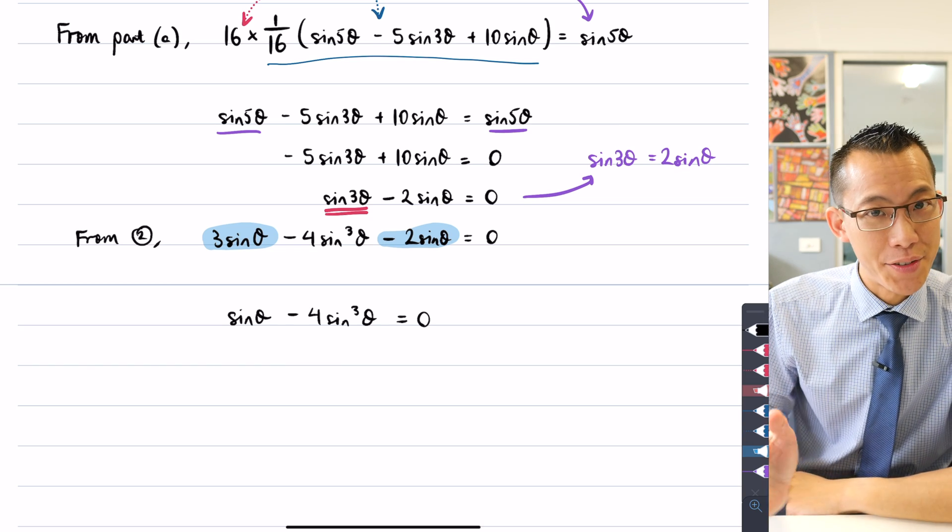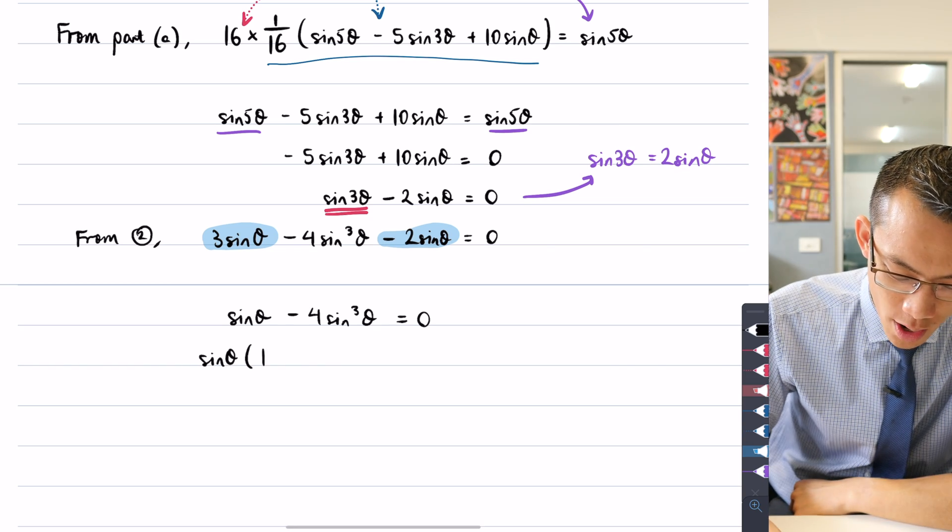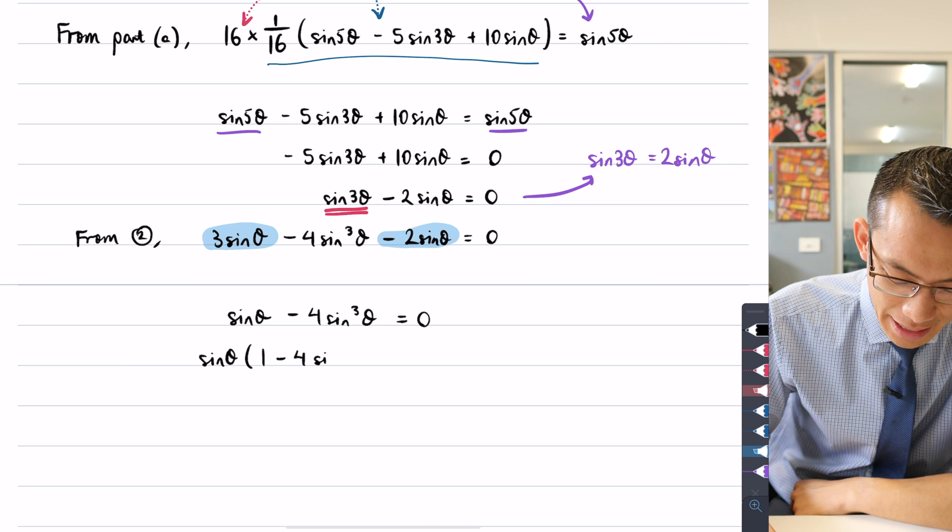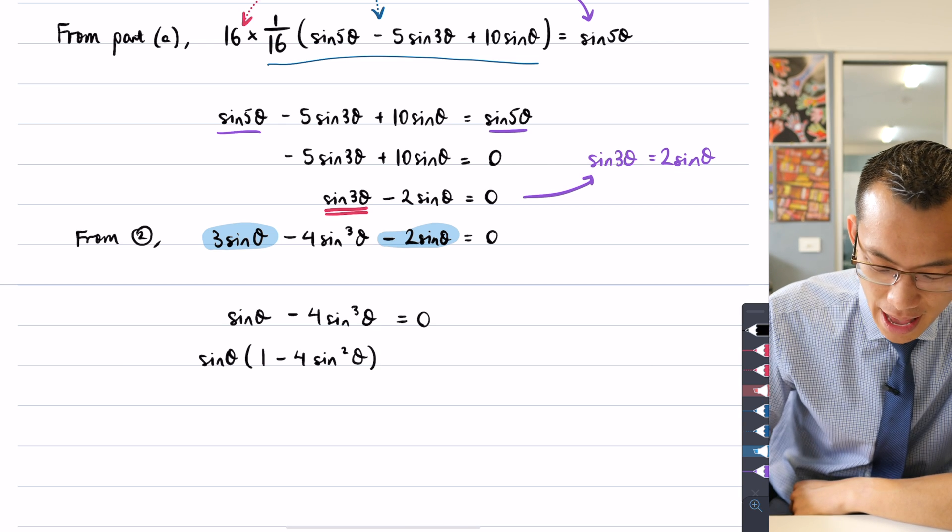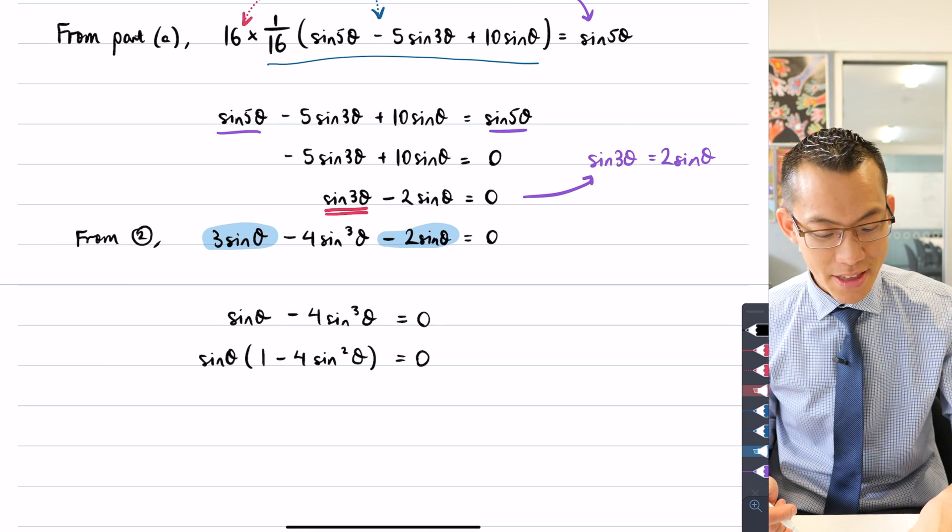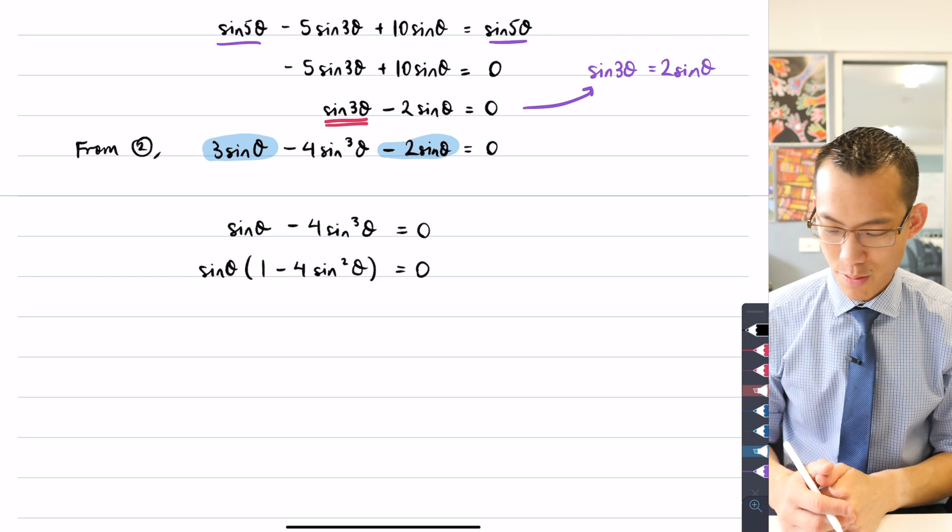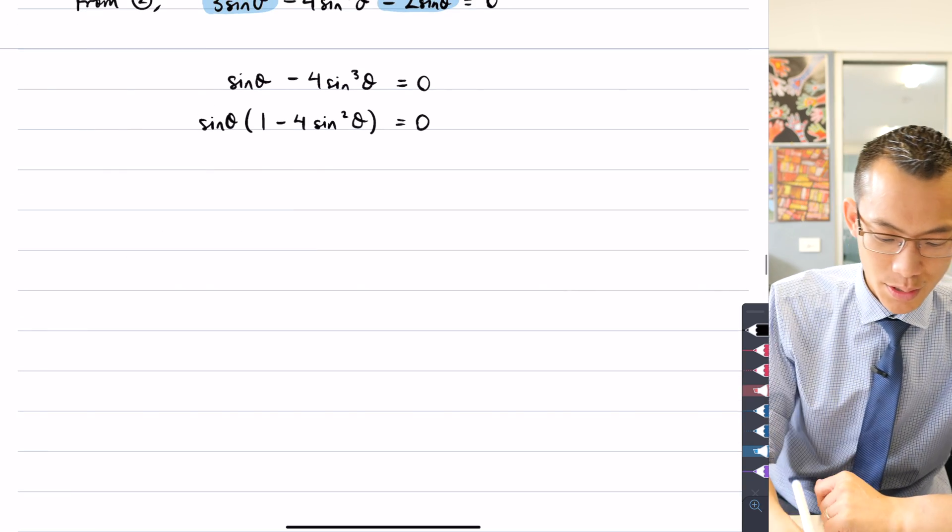I can do a factorization out of sinθ. That's the common factor. So that leaves me with sinθ out the front. 1 minus 4 sin²θ and that's equal to 0. So I have a product. It's equal to 0. And this will be true if either of the factors in the product are equal to 0 themselves.